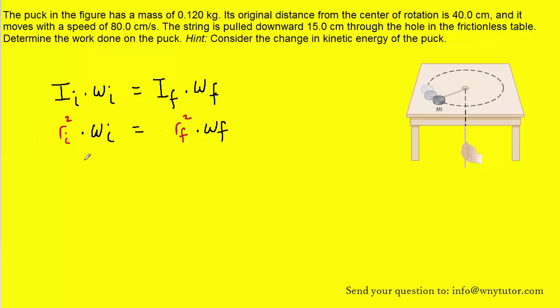And then we can start to think about what quantities are given to us in this problem. We can see that the original distance that the puck is from the center of rotation is 40 centimeters. So what that means is the initial radius, or ri, is equal to 40 centimeters. The question goes on to tell us that the string is pulled downward by 15 centimeters.